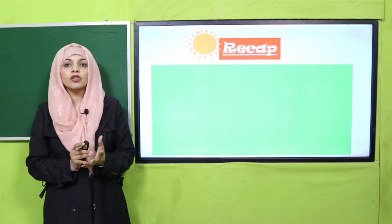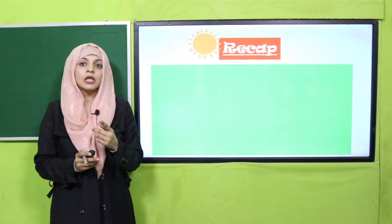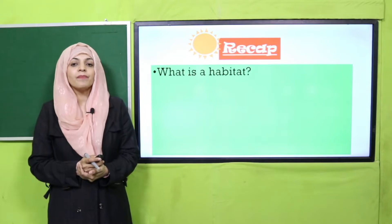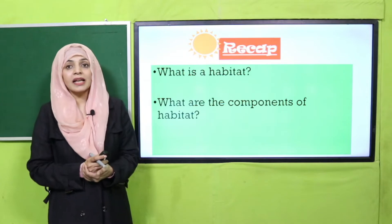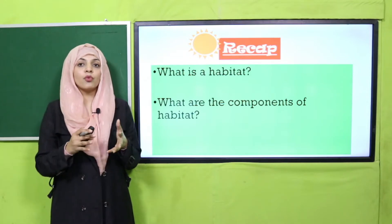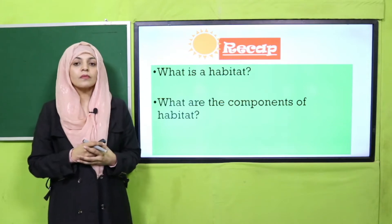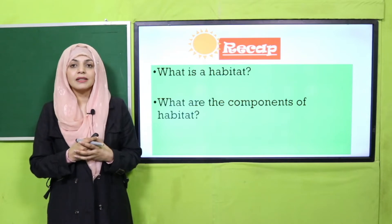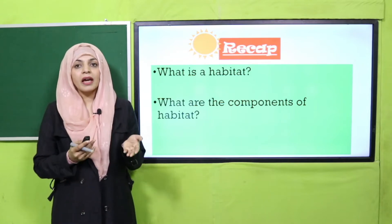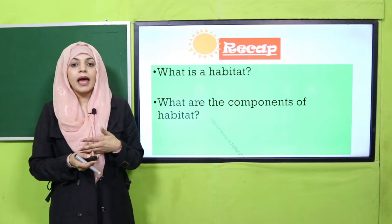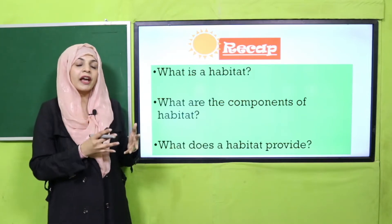My dear students, before moving on towards our main lesson, let's quickly recap what we have done in the previous lesson. You have to answer a few questions. Quickly tell me: what is a habitat? A habitat is a place where plants and animals live, and there they get food, water, shelter and life gases. What are the components of habitat? The components of habitat are living and non-living components. And what does a habitat provide? A habitat provides food, water, air and shelter.